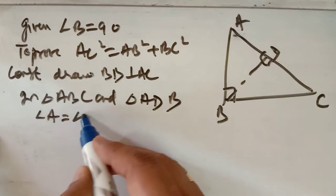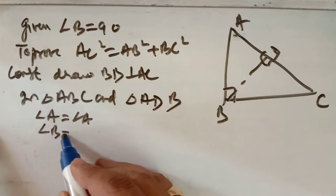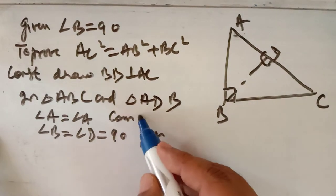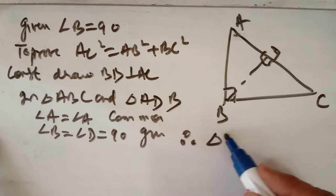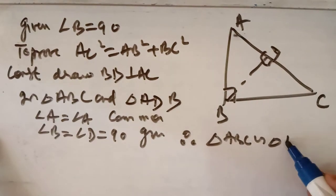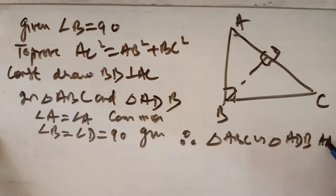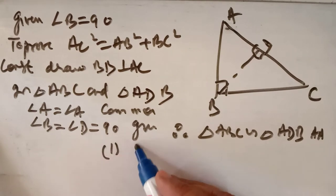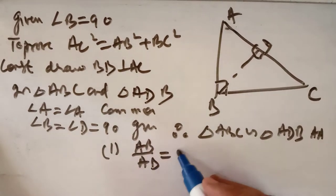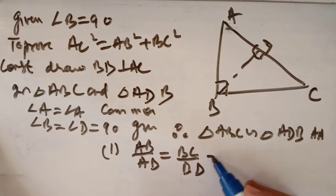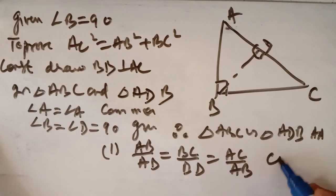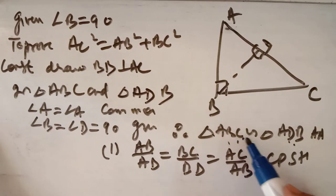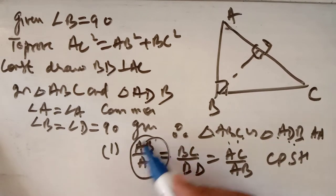We will prove that triangle ABC and triangle ADB are similar. In these two triangles, angle A is common and angle ADB equals 90 degrees. It is given and angle A is common. So triangle ABC is similar to triangle ADB by AA. The order is very important. When ABC is similar to ADB, we can write AB/AD = BC/BD = AC/AB.